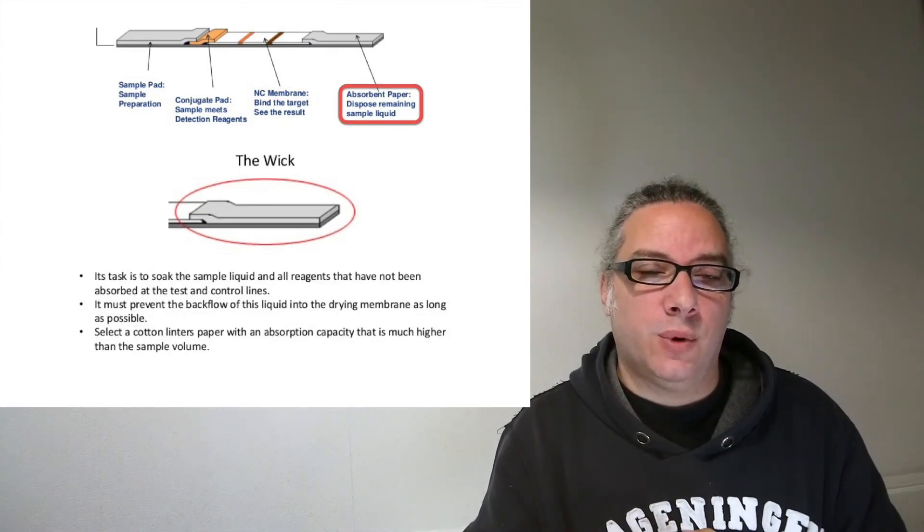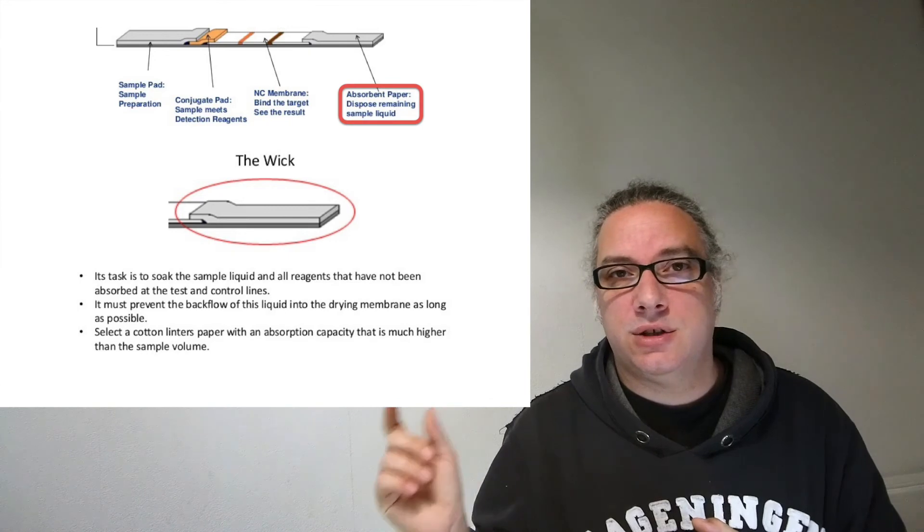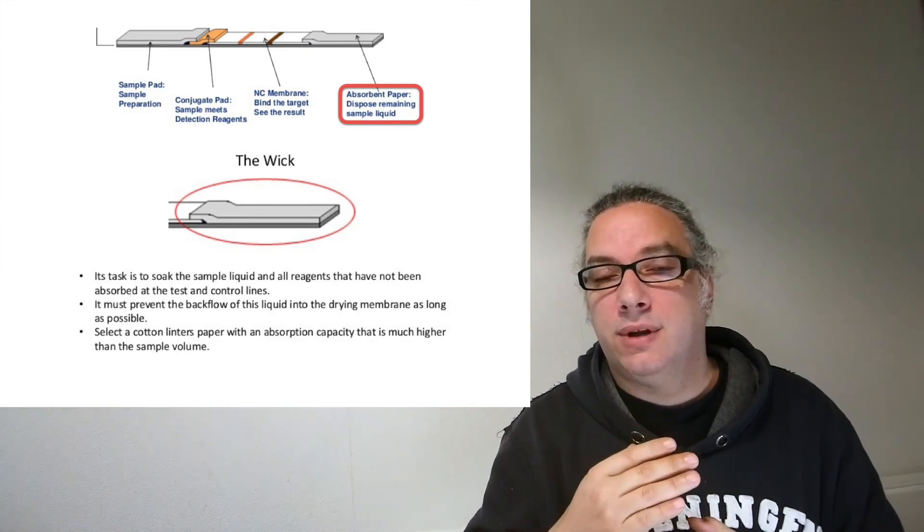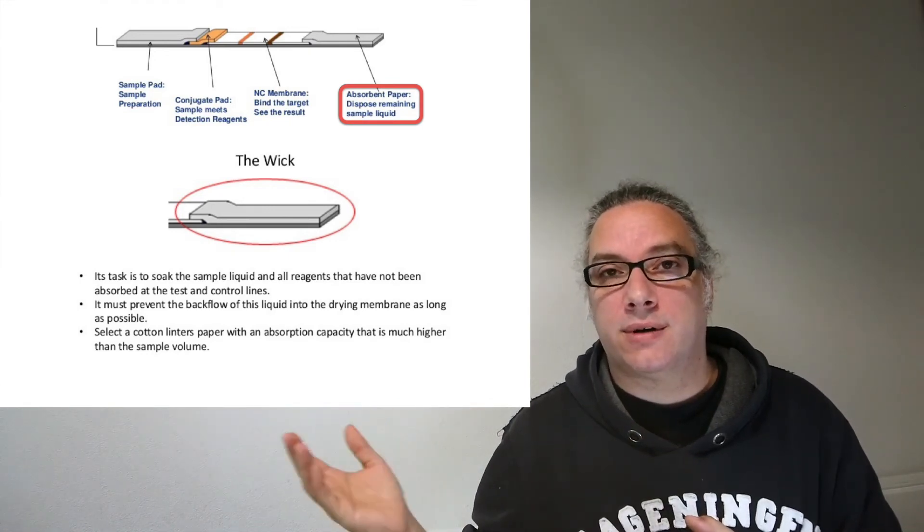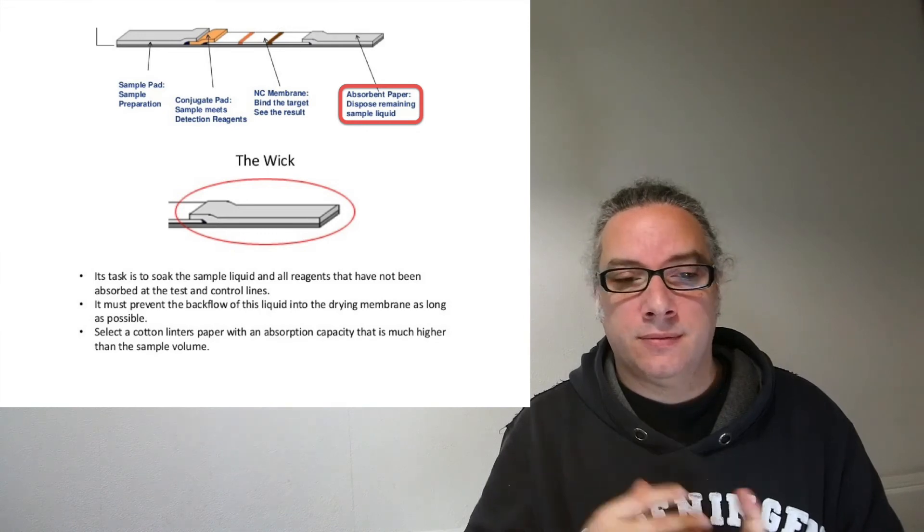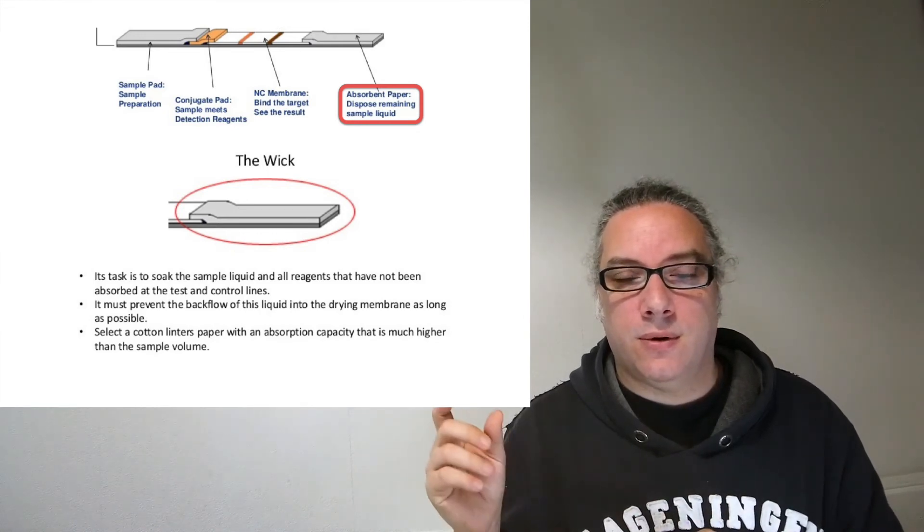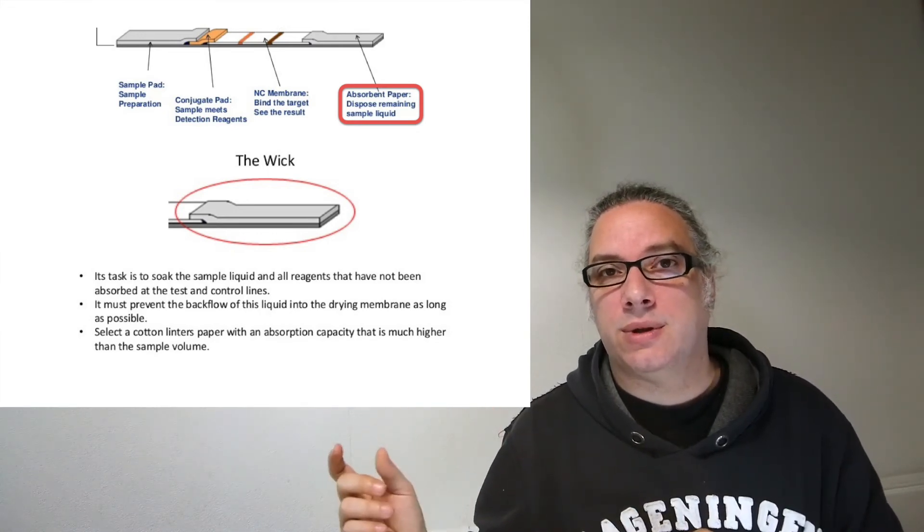And then you have the wick. The wick part is just for not letting the liquid overflow after your detection. This is just a safety for absorbing the rest of the liquid outside.